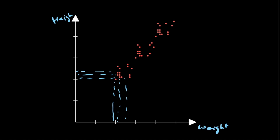For example, in this case, you can see intuitively that weight and height are increasing with each other. As weight increases, the height increases. So covariance is calculated by slightly tweaking the variance formula.